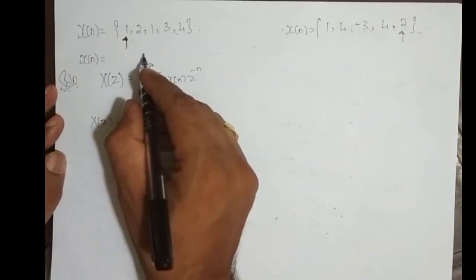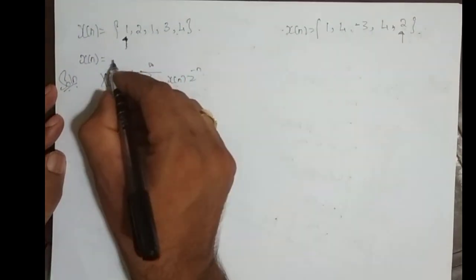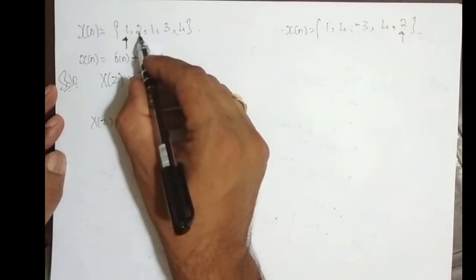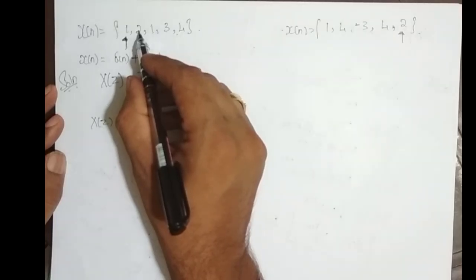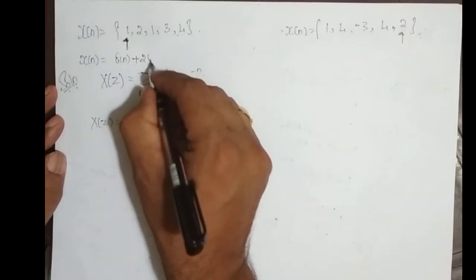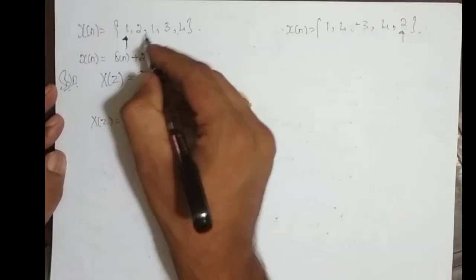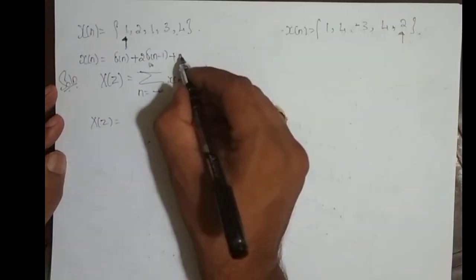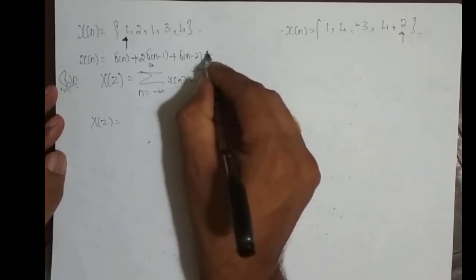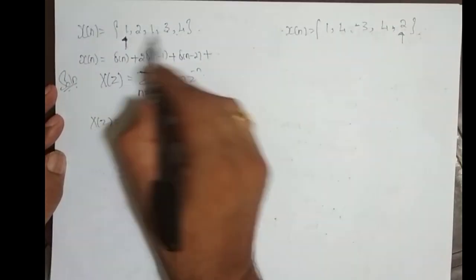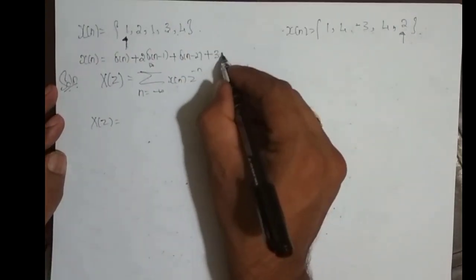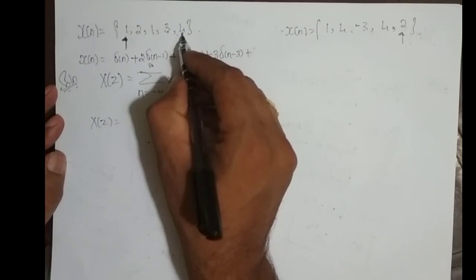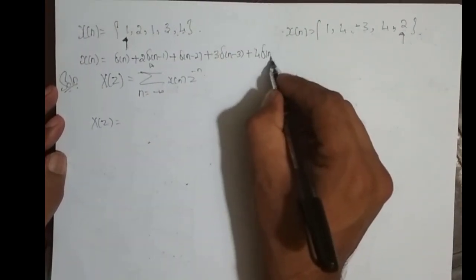How do we convert this to delta function? At n equal to 0, it is delta(n) with amplitude 1. At n equal to 1, it is 2 times delta(n minus 1). At n equal to 2, it is delta(n minus 2). At n equal to 3, it is 3 times delta(n minus 3). At n equal to 4, it is 4 times delta(n minus 4).